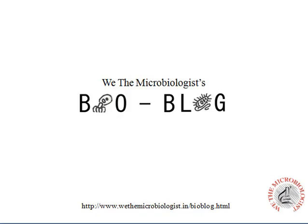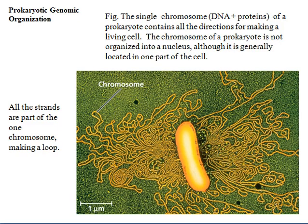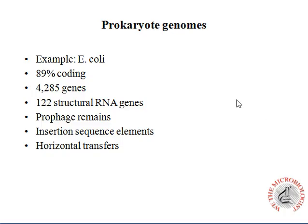Welcome to Bio Blog. Today we are going to discuss prokaryotic genomic organization. In prokaryotic genomic organization, the chromosome is not organized into a nucleus — they stay independent. In eukaryotes, the chromosome is present inside the nucleus. If you uncoil the highly condensed chromosome, you'll find it is very large in length, as shown in this figure.